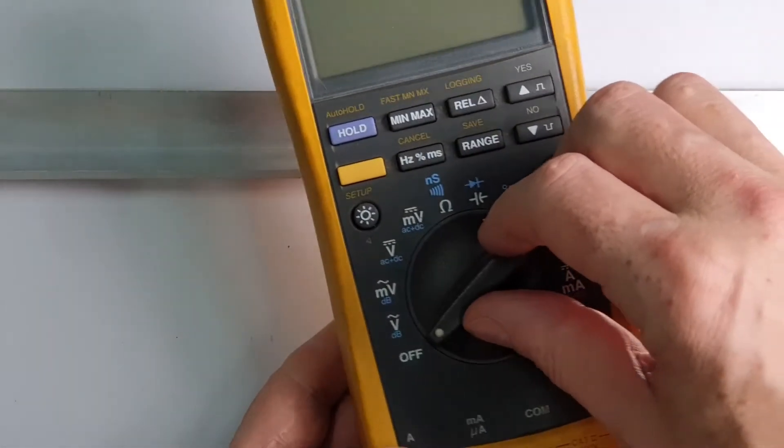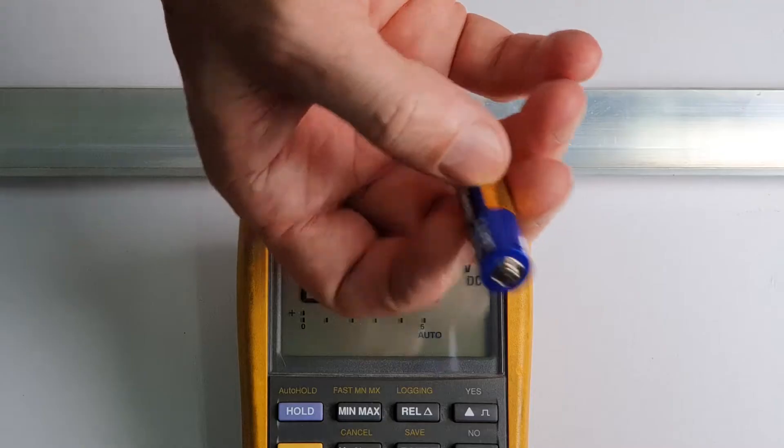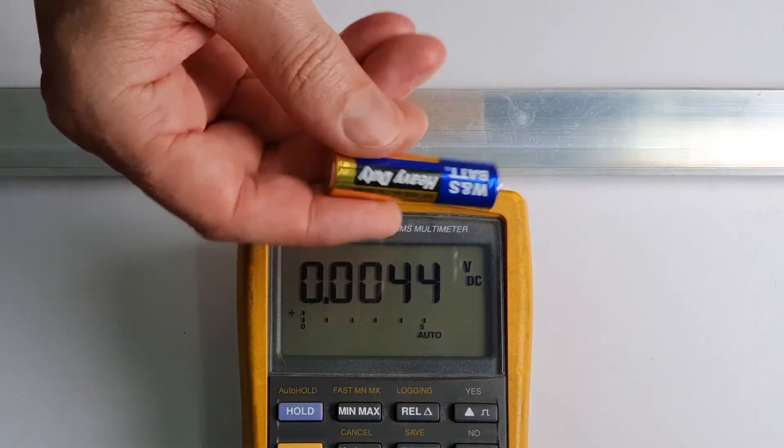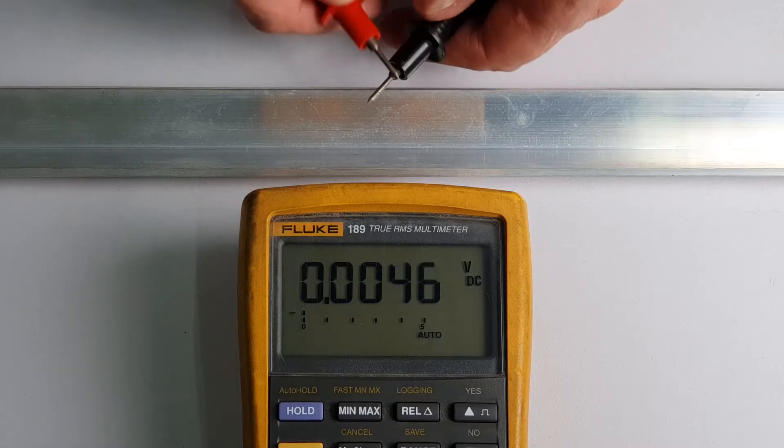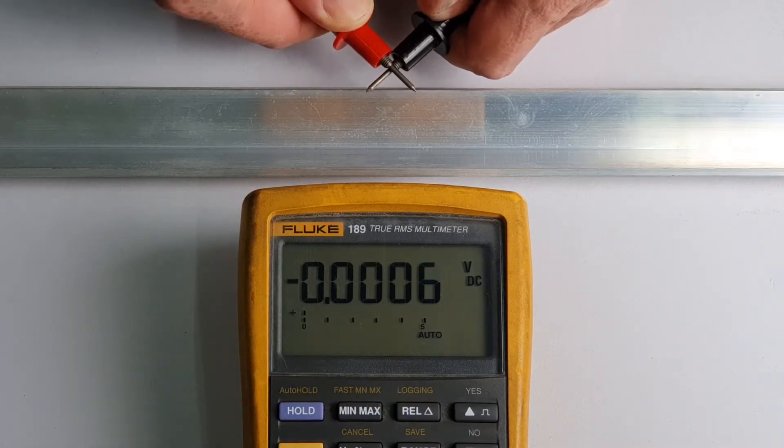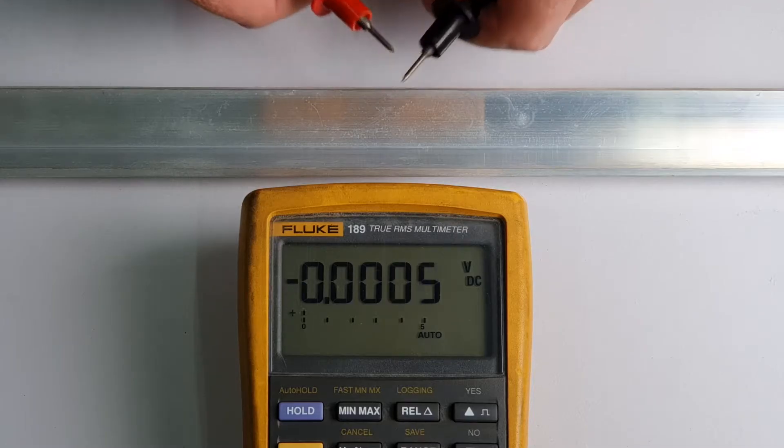Let's take our DMM or digital multimeter and put it on the volts range and investigate some batteries. The first thing I like to do is check the zero offset of my meter. We connect the probes together and check that it reads pretty much zero. It's reading within a millivolt of zero. Good enough.